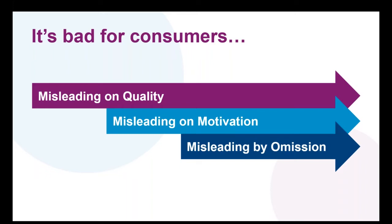Not making clear that a post is an ad could mislead people — that could be about the quality of a product if an influencer is making a big song and dance about how wonderful something is without really knowing or caring if it is. It could also mislead consumers about the motivations for mentioning a product, and most importantly it's misleading consumers by omission — whether they're hearing a genuine unincentivised opinion or a paid-for one is likely to affect their decisions about how much weight they want to give a claim and how likely they are to make a purchase.